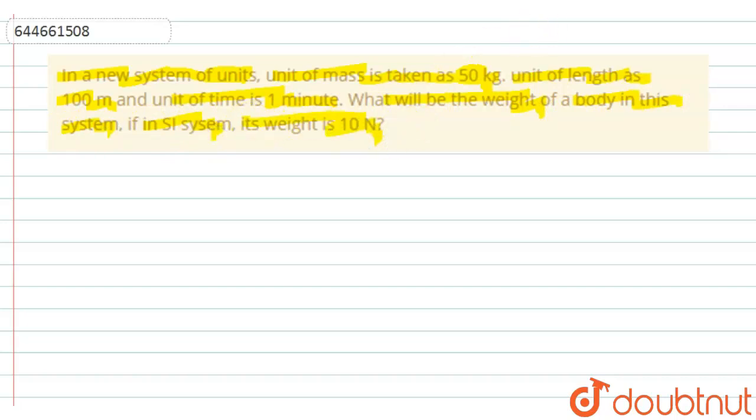We are given in this question two systems: one is the SI system we have, and one is the new system that they have provided. In SI system, we generally take the unit of mass to be equal to 1 kg, but in the new system, we have to take unit of mass to be 50 kg.